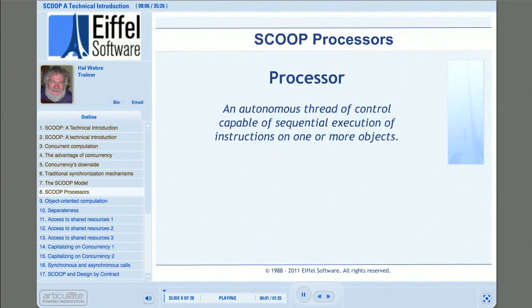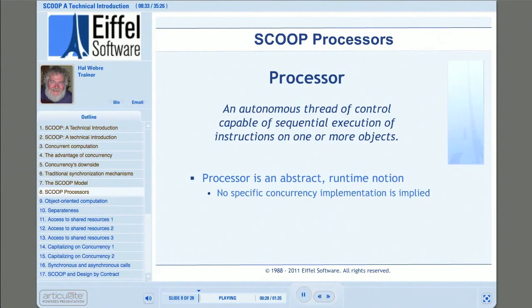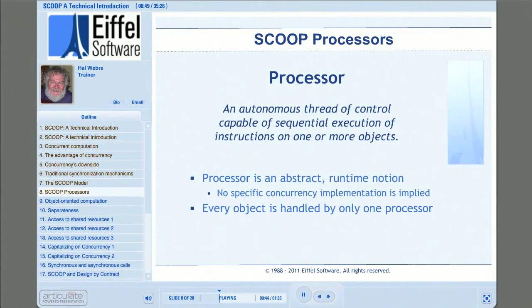The first entry in your SCOOP glossary should be 'processor.' A processor, in SCOOP terms, is an autonomous thread of control capable of sequential execution of instructions on one or more objects. It's important to understand that, despite the use of the term 'thread' in the definition, a SCOOP processor does not imply any particular hardware or software implementation. A SCOOP processor might be implemented by a process thread, but it might also be implemented by some other mechanism, such as a separate distributed computer system. In SCOOP, each runtime object has one and only one SCOOP processor that handles it, though each processor can handle more than one runtime object.